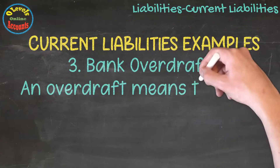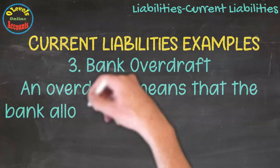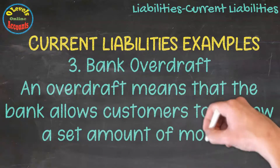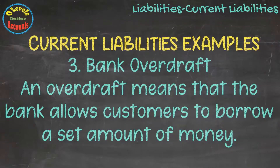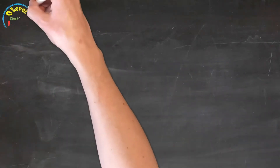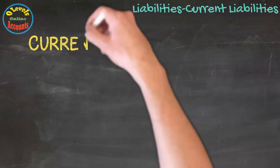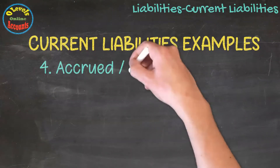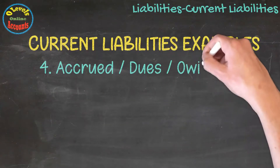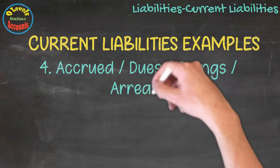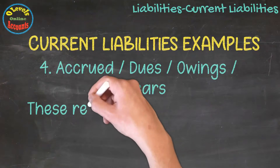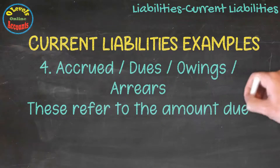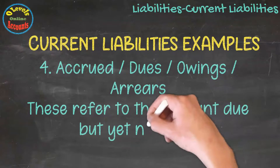An overdraft means that the bank allows customers to borrow a set amount of money. The fourth example of current liabilities is accrued expenses, also referred to as dues, owing, or arrears. These refer to amounts that are due but not yet paid.